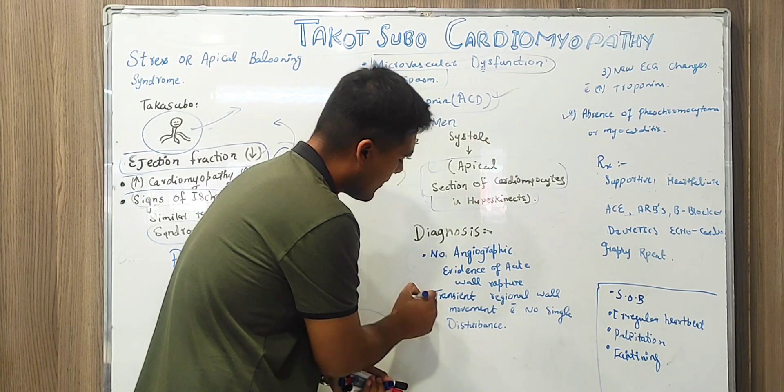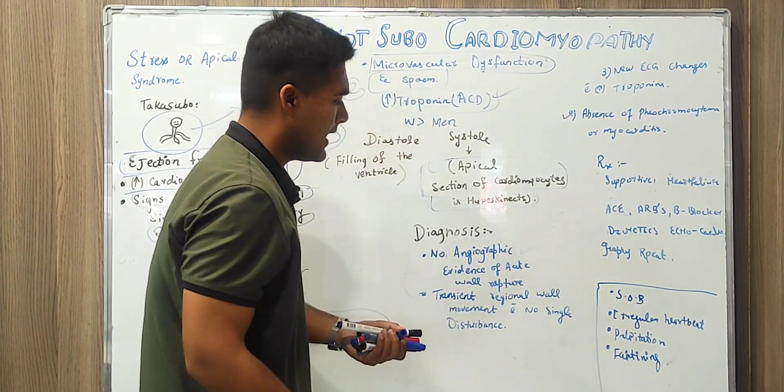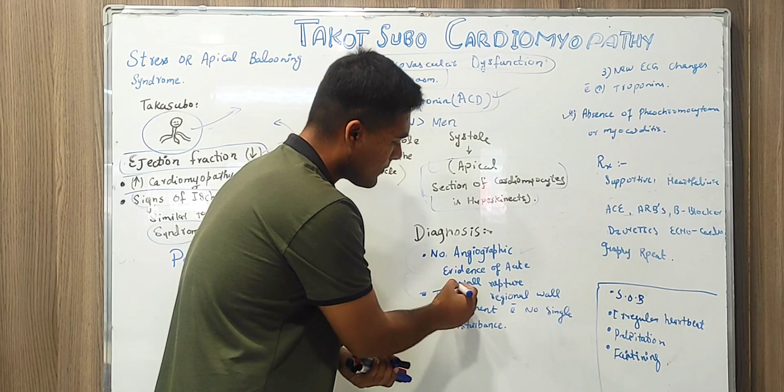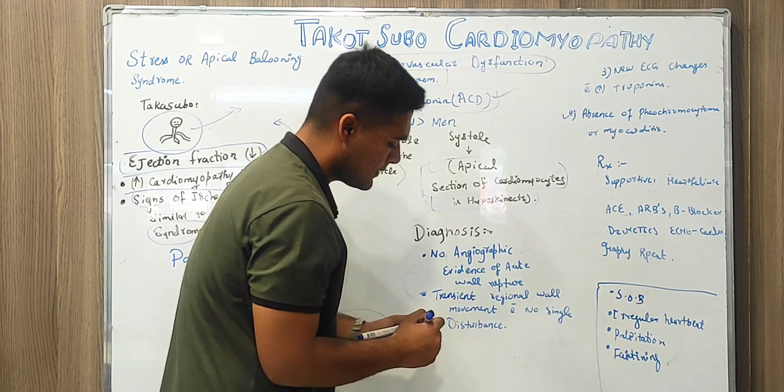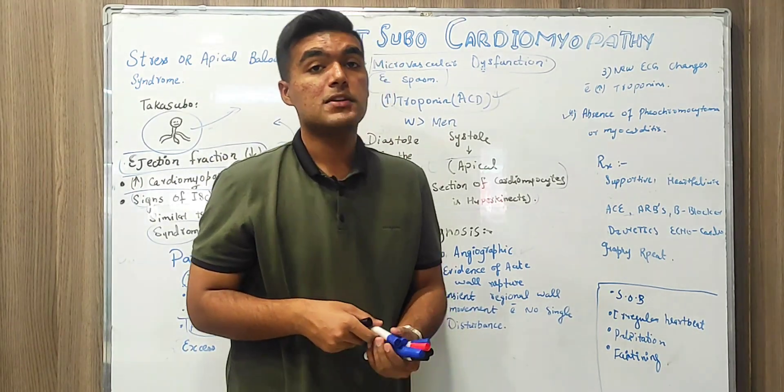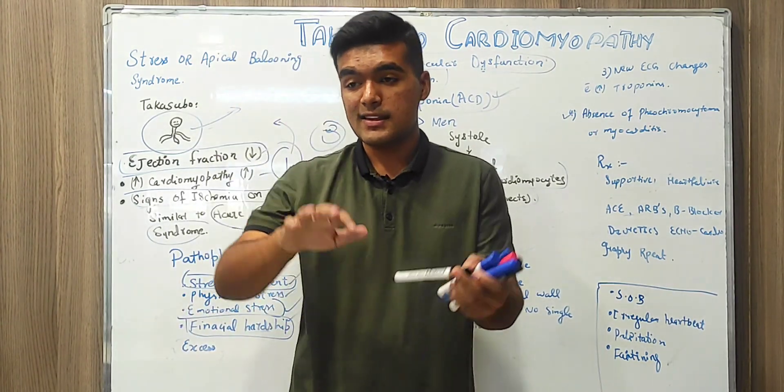We also have four important points in which we see angiographic evidence, wall ruptures, in which we see transient disturbances.